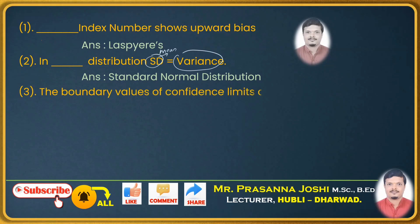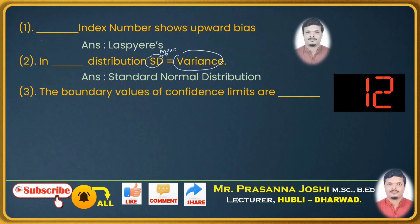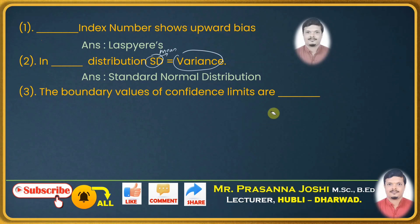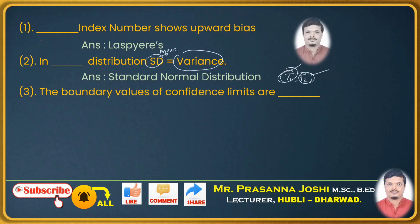Next: the boundary values of confidence limits are dash. The confidence interval is (t1, t2), proposed to contain the population parameter. The boundary values t1 and t2 of the confidence interval are called confidence limits. So the answer is confidence limits.